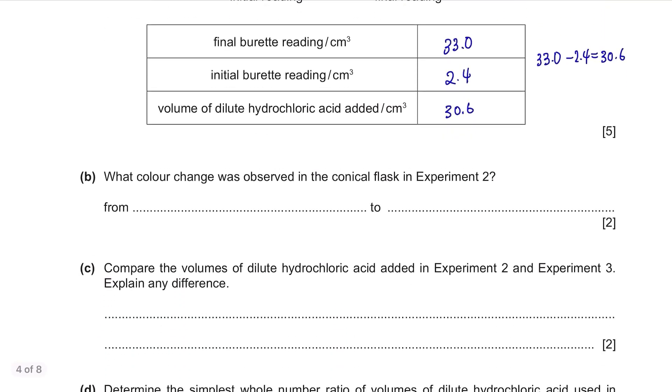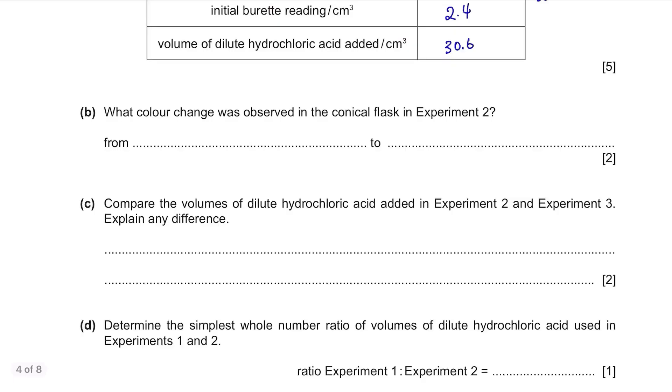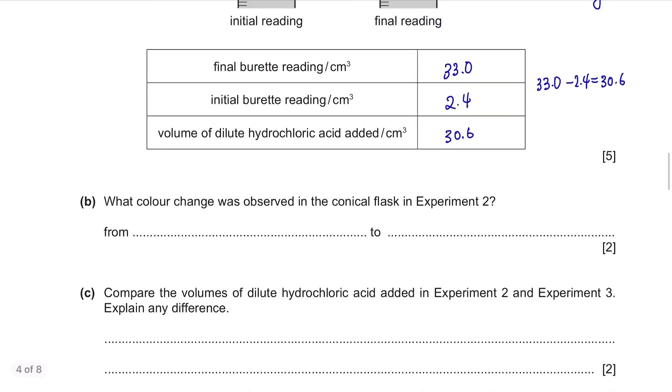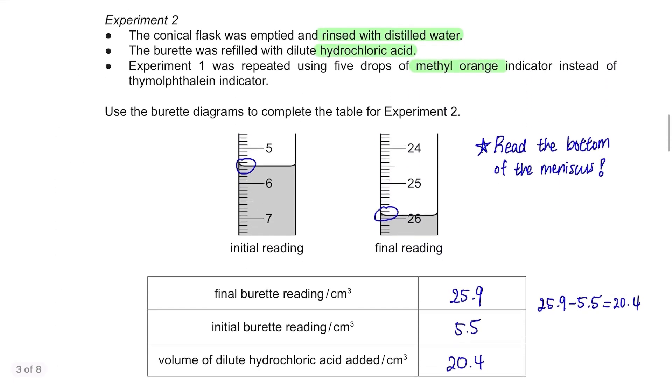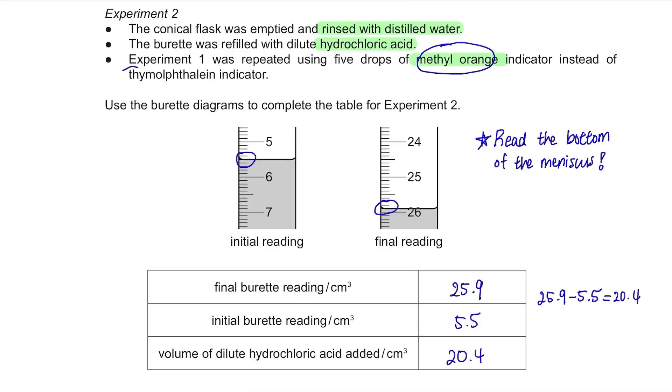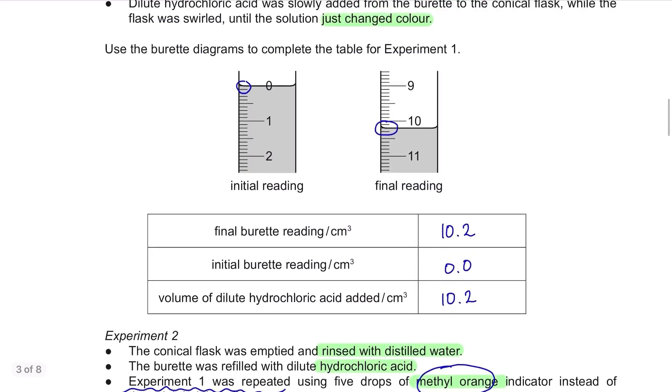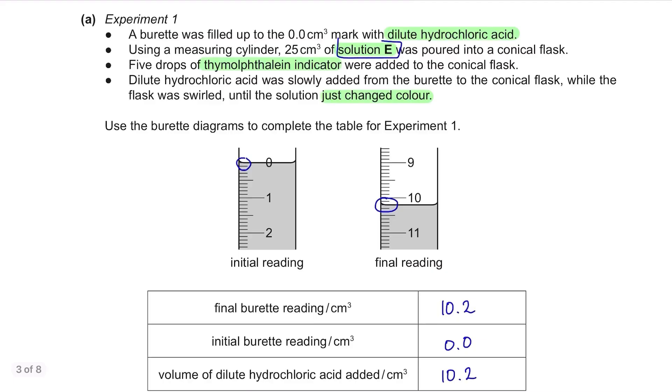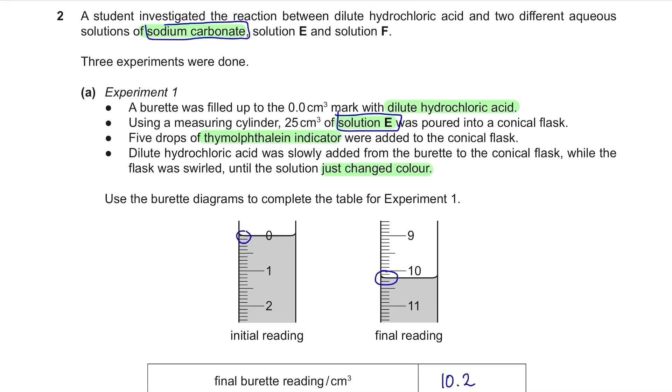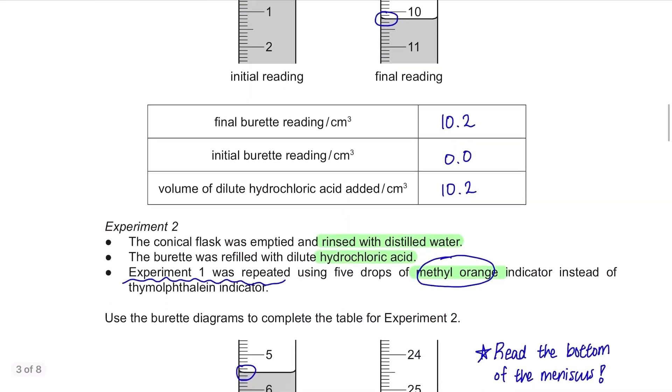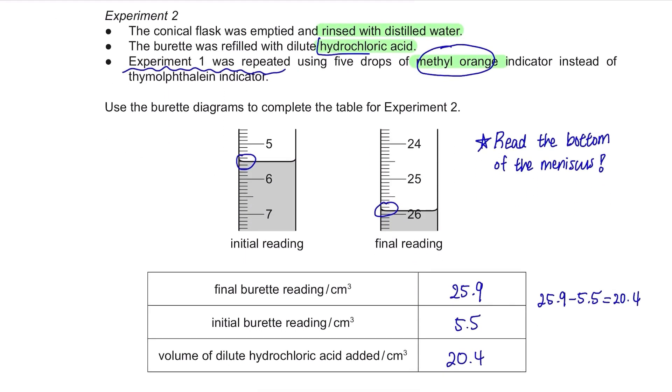Part B. What colour change was observed in the conical flask in experiment 2? In experiment 2, they used methyl orange indicator. In the conical flask, they put solution E which is solutions of sodium carbonate, a basic substance. Then they added hydrochloric acid so the solution changed from a base to an acid. In this case, the methyl orange will change from yellow to red.